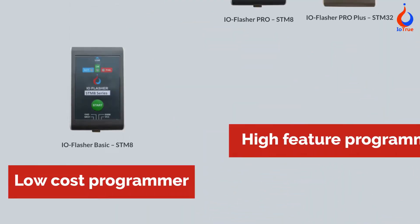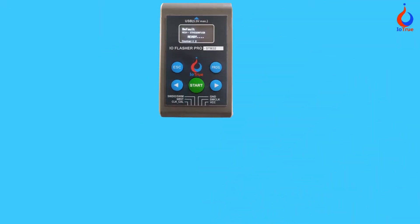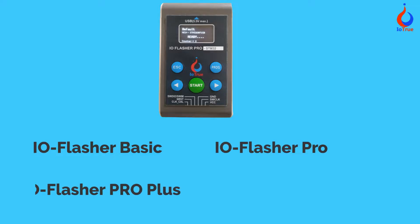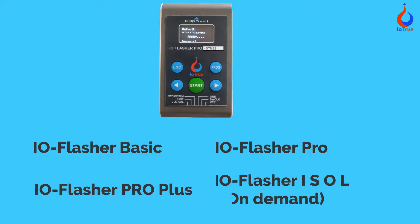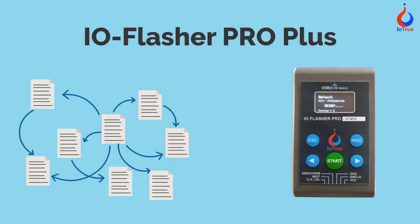IO Flasher comes in different models, from very low-cost to high-feature-rich programmers. The available models are: IO Flasher Basic, IO Flasher Pro, IO Flasher Pro Plus, IO Flasher ISOL, and on-demand variants. IO Flasher Pro Plus can store multiple hex files for different products, selectable by an interactive keypad and LCD.